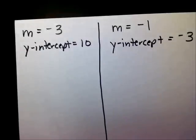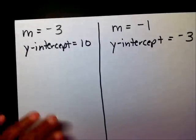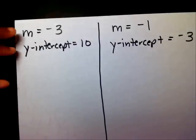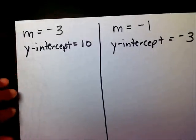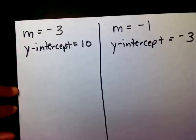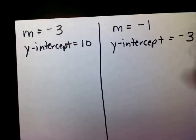Here are 2 problems for you to work. I'd like for you to take this information and write it in slope-intercept form, and do the same with the second set of information. Please place the video on pause while you write the slope-intercept form.